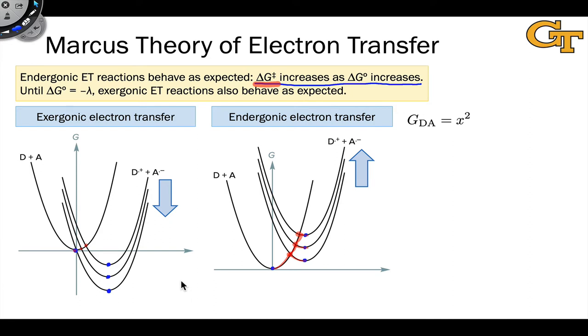We're treating these potential energy surfaces as parabolic. This means we can model the reactant potential energy surface using this equation: the free energy is equal to x squared. It's simply a parabolic function of x, the nuclear coordinates, including the solvent. The product potential energy surface is shifted both horizontally and vertically with respect to the reactant surface. The vertical shift can be modeled by delta G, the thermodynamic delta G, and the horizontal shift is equal to the square root of the reorganization energy.